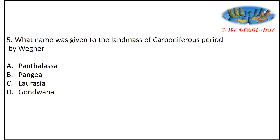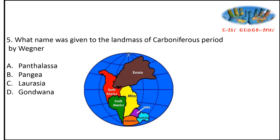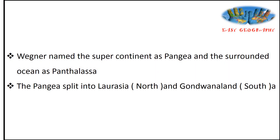What name was given to the landmass of the Carboniferous period by Wegener? Options: Panthalassa, Pangaea, Laurasia, Gondwana Land. According to continental drift theory, during the Carboniferous period there was only one continent surrounded by a large ocean. The super continent was named Pangaea, and the surrounding ocean was named Panthalassa. Then Pangaea split into Laurasia in the north and Gondwana Land in the south.